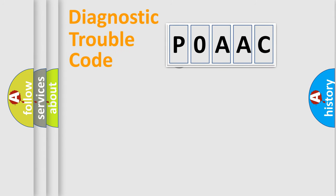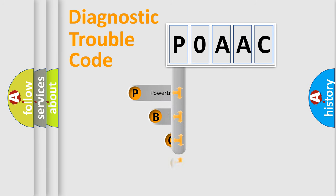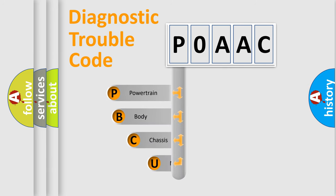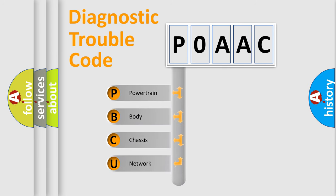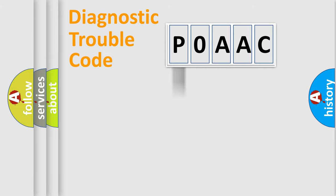First, let's look at the history of diagnostic fault code composition according to the OBD2 protocol, which is unified for all automakers since 2000. We divide the electric system of automobile into four basic units: Powertrain, Body, Chassis, and Network. This distribution is defined in the first character of the code.